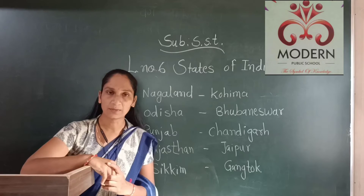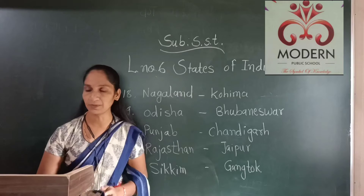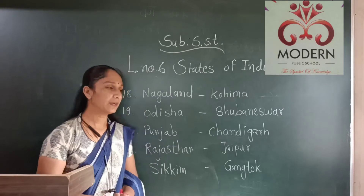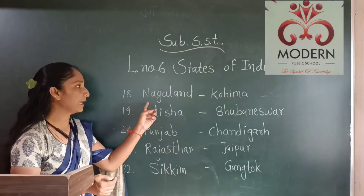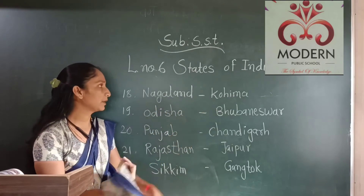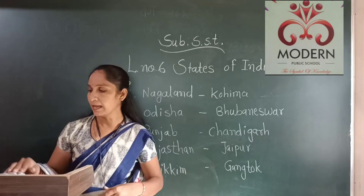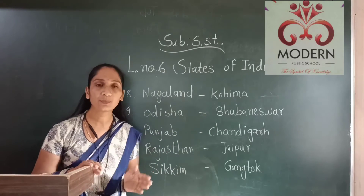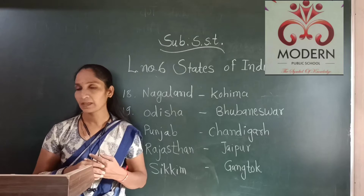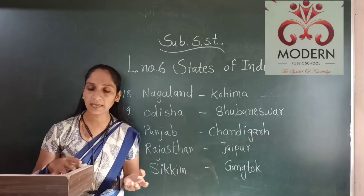Open to chapter number 6, States of India, page number 271. First we see here Nagaland. Nagaland's state capital is Kohima. And which language is spoken by the people? English and the original languages used by the tribes.